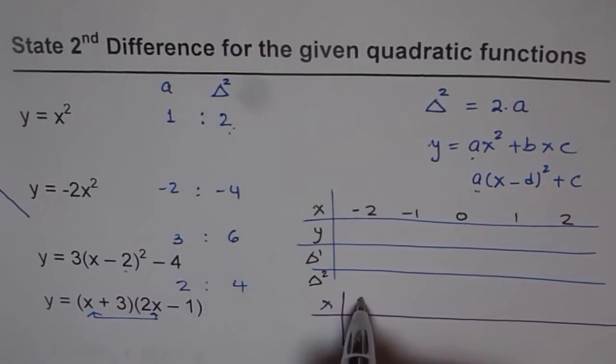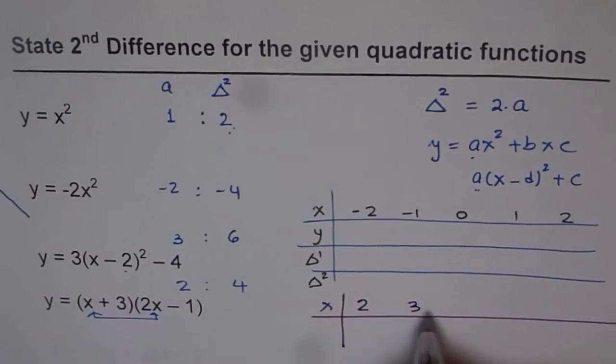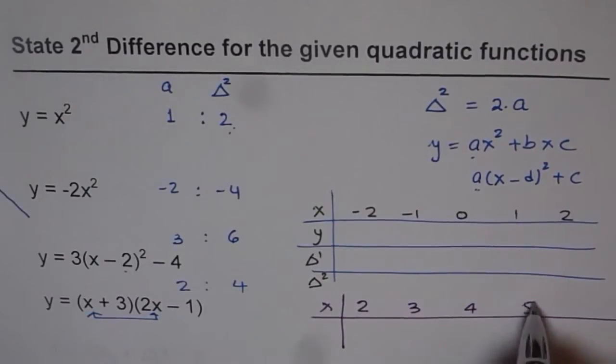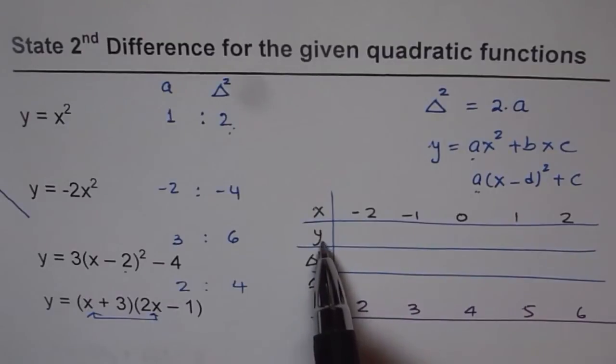So let's consider the values for this function as starting from 2, it could be 2, 3, 4, 5 and 6. Find y value calculated from the formula, first difference and second difference. And then check for yourself do you get the same second difference or not.